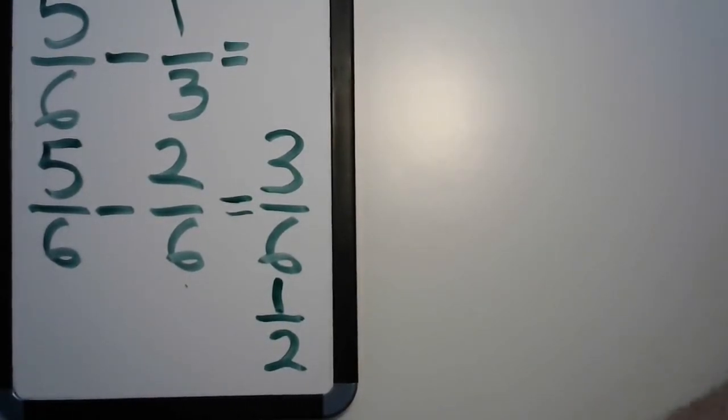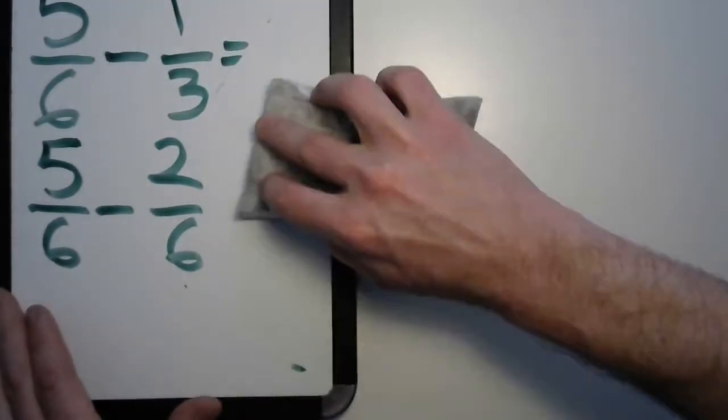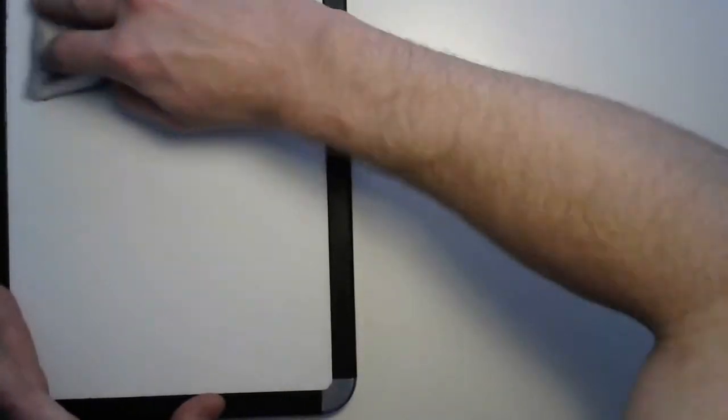Well, let's try another one. What if we had something a little stranger, like three-fifths minus a half? Let's write that one down.